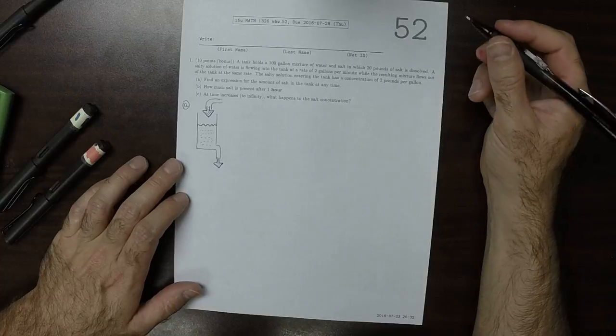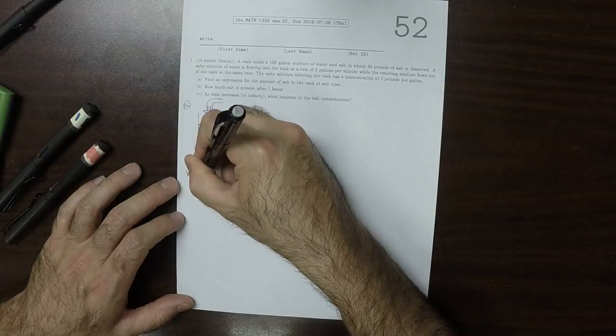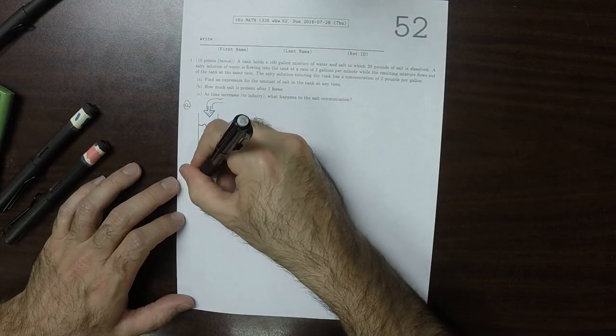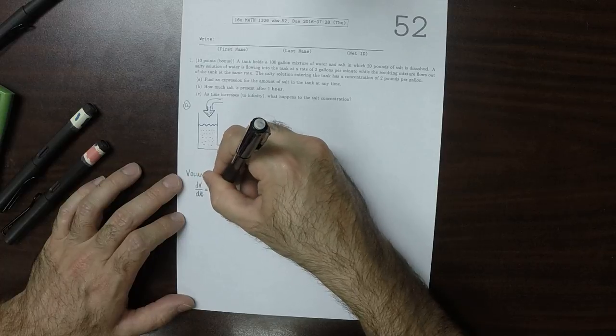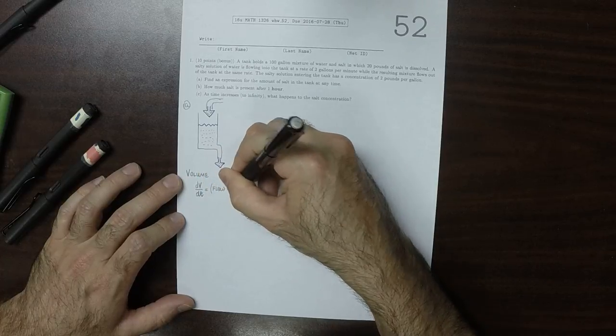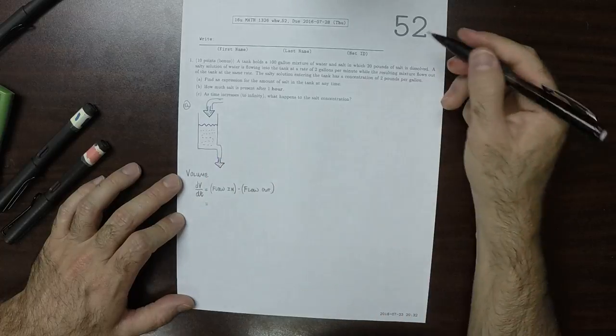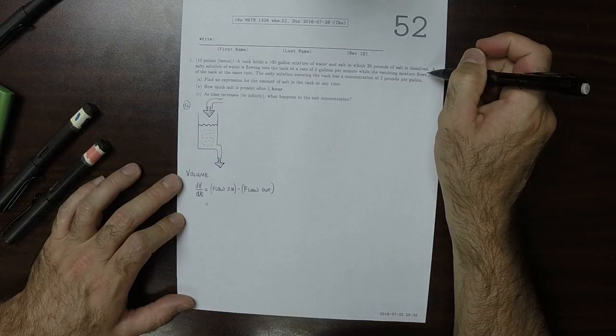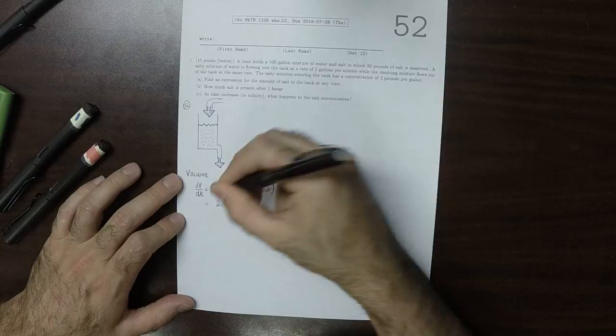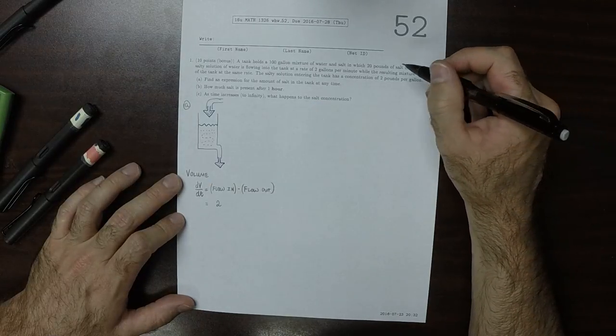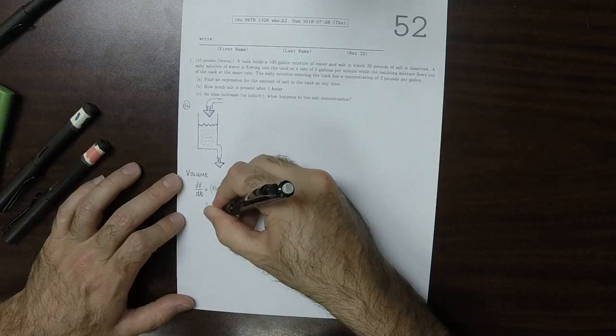So let's take an account of what's coming in. Let's figure out the volume first. We know that dV/dt will be the flow in minus the flow out. According to the story, two gallons per minute comes in, and the resulting mixture flows out at the same rate, so minus two. So dV/dt is zero.